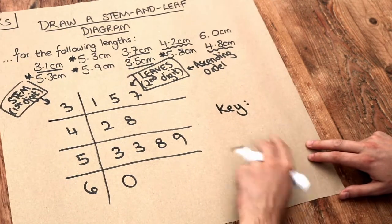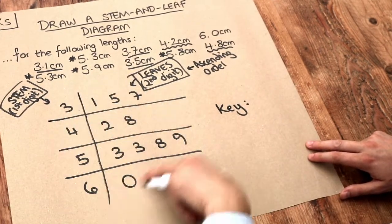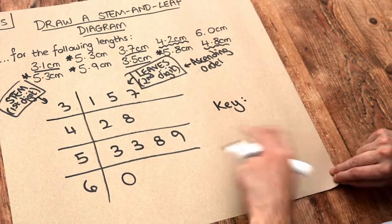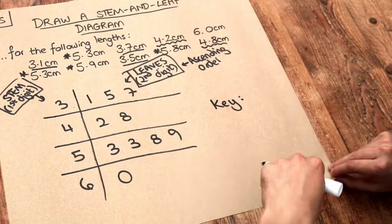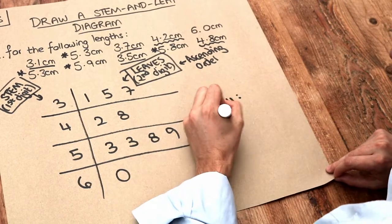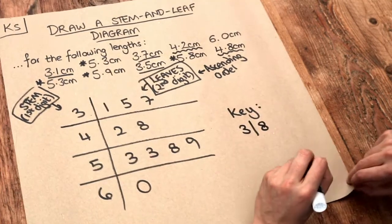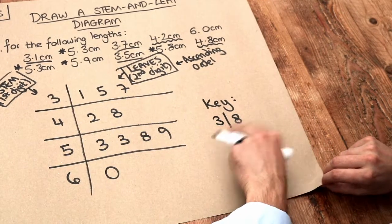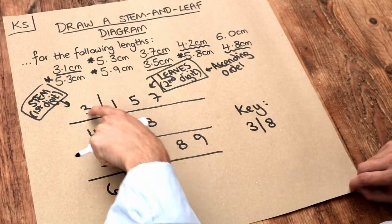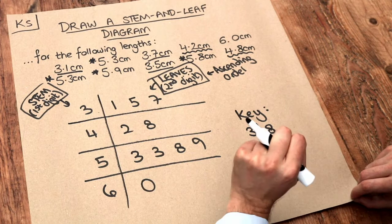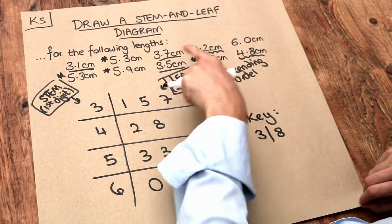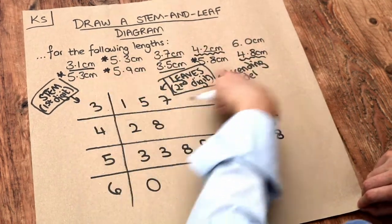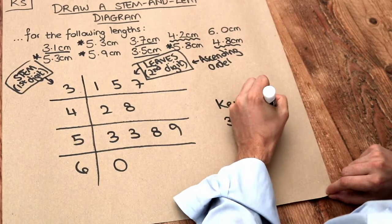What we do is give an example of what something in this stem and leaf diagram would actually mean. It doesn't have to be one of the values in the table — for example, we could write three bar eight. That's not in the table, but as an example, three bar eight would represent 3.8 centimeters, to match the format of these values. So we write: means 3.8 centimeters.